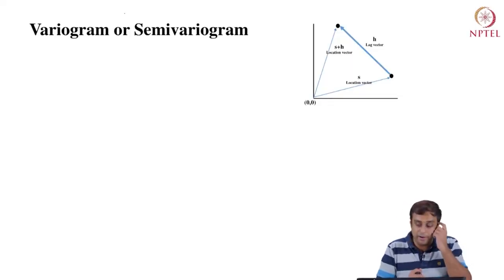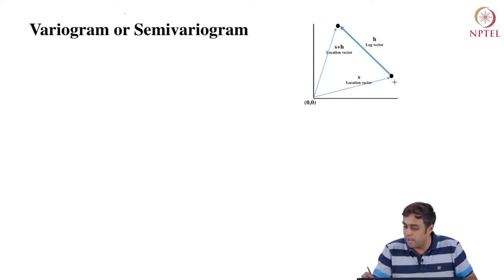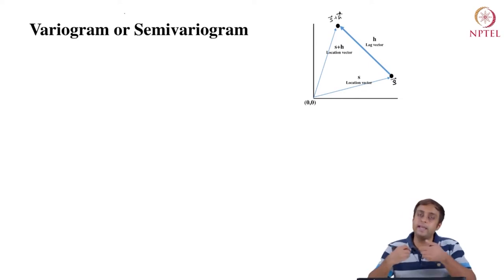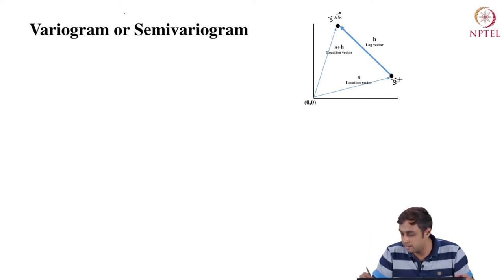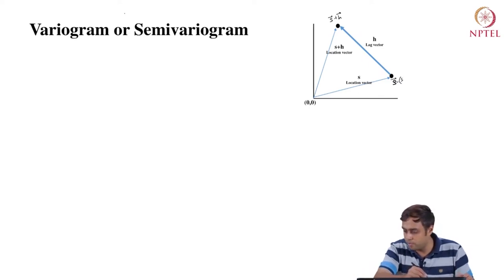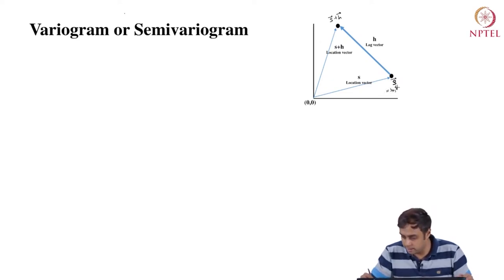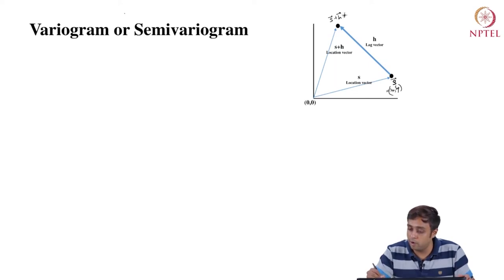On the right top corner of your screen, you see an origin 0 comma 0 and two locations given by vector S and vector S plus H. H is obviously a lag vector. Location S has two coordinates, SX comma SY. And S plus H can be thought of as having coordinates S-tilde-X and S-tilde-Y.